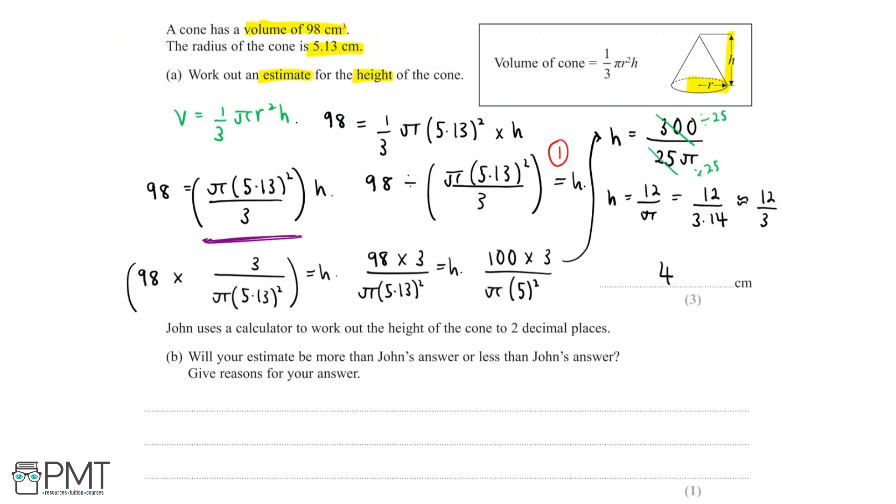Now the second mark is for rounding to one significant figure in order for us to be able to estimate the value for the height, which we've done over here. We've said 98 rounds to 100 and 5.13 rounds to 5. And that final mark is for getting an answer between 3.5 and 4.5.